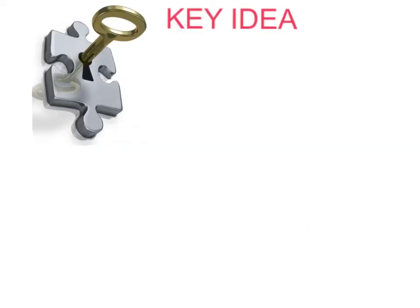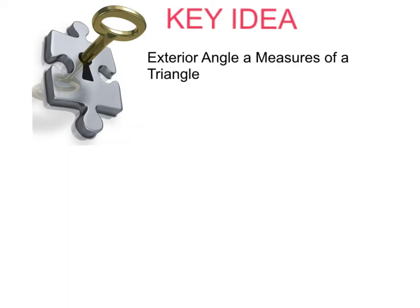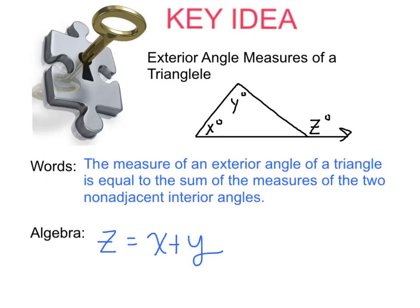Today, you have a second key idea. This key idea is over exterior angles of a triangle — we're talking about the exterior angle measures of a triangle. Here is what the exterior angle theorem states: the measure of an exterior angle of a triangle is equal to the sum of the measures of the two non-adjacent interior angles. That seems like a lot, so let's look at our picture.